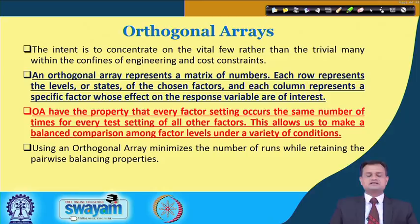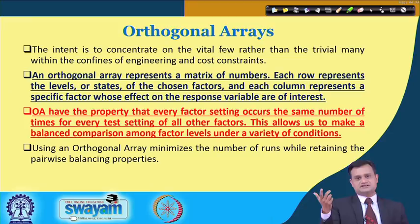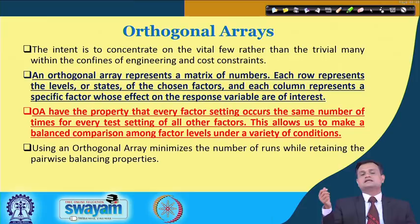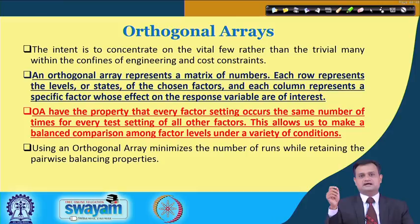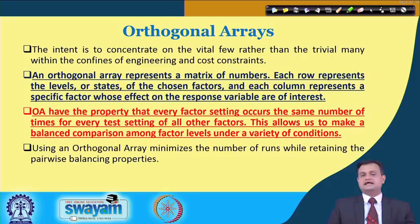Each row represents the levels of the chosen factor and each column represents a specific factor whose effect on the response variable is of interest. A key property of orthogonal arrays is that every factor setting occurs the same number of times for every test setting — this allows a balanced comparison among factor levels under a variety of conditions, so there is no bias.